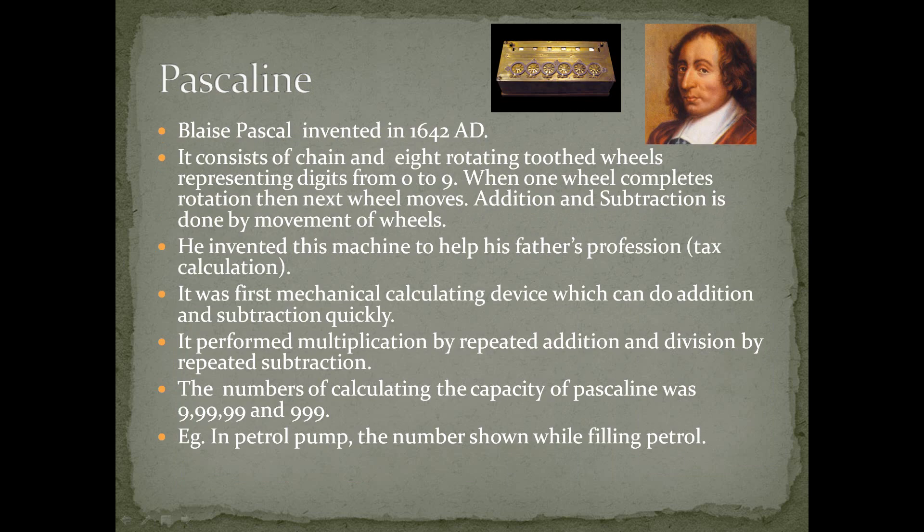Pascaline was invented by Blaise Pascal in 1642 A.D. It consists of a chain and eight rotating toothed wheels representing digits from zero to nine. When one wheel completes a rotation, the next wheel moves. Addition and subtraction is done by the movement of wheels. He invented this machine to help his father, who was a tax collector.